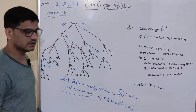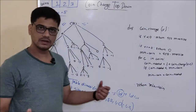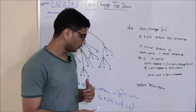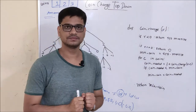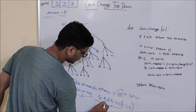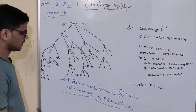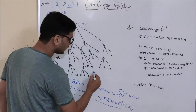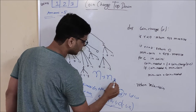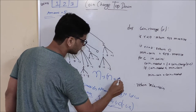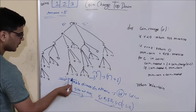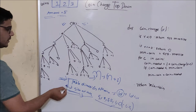But do we know the answer for minus 1, minus 2, minus 3? Yes, we know — and it is infinity. For every negative value, my answer is infinity. So basically, the unique things we need to store are 5, 4, 3, 2, 1. If the amount is N, then my table dimension will be N plus 1. That is, my table size will be N plus 1.